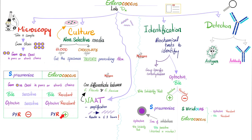So here are the only two gram-positive catalase-negative organisms that are PYR-positive: number one, Streptococcus pyogenes; number two, Enterococci. All the other streptococci are PYR-negative. You can culture enterococci on blood agar or chocolate agar — it is non-selective, meaning enterococci can grow and multiply in a wide variety of conditions.